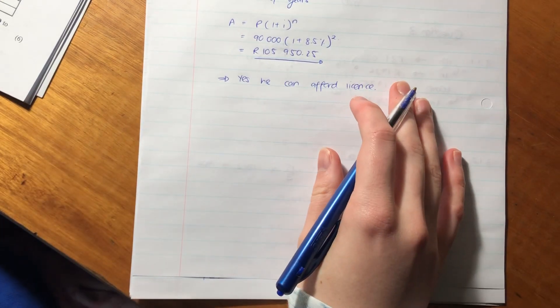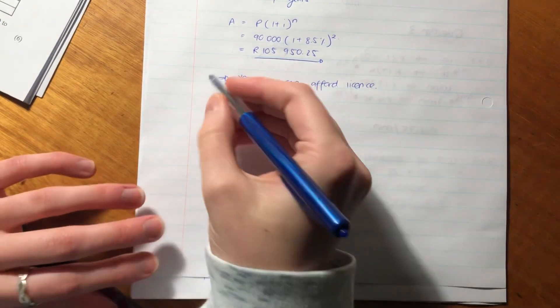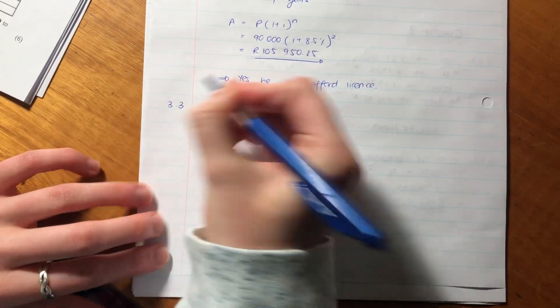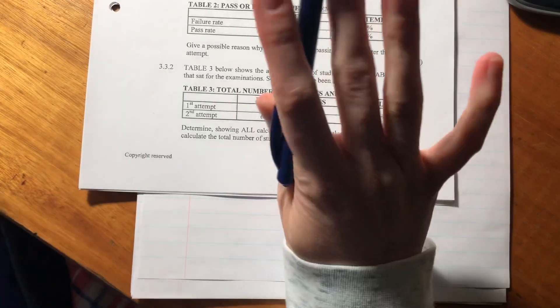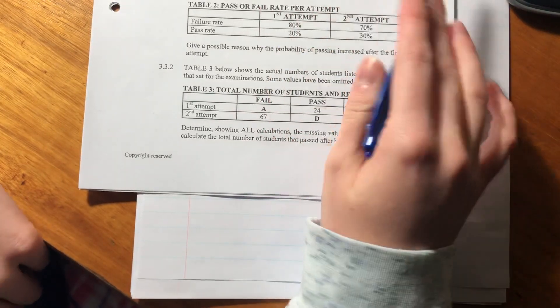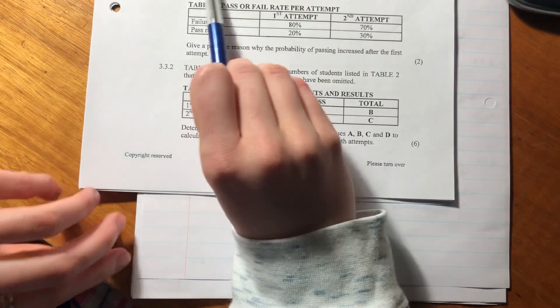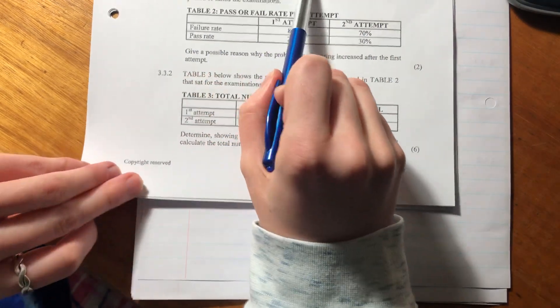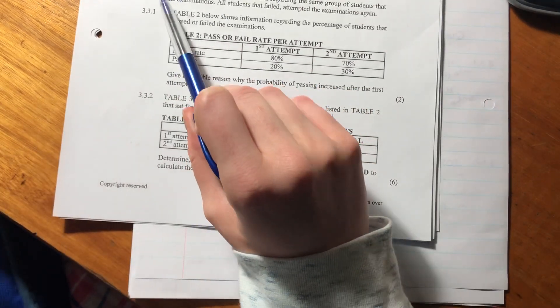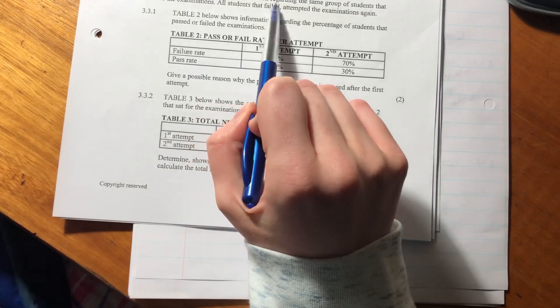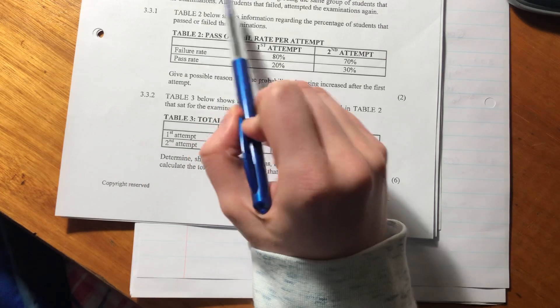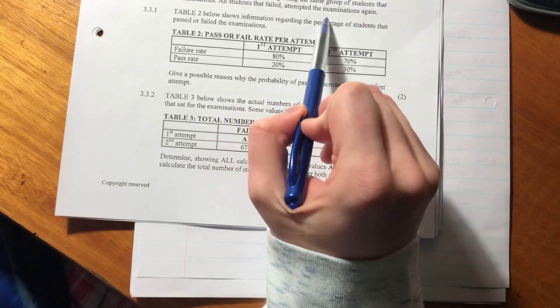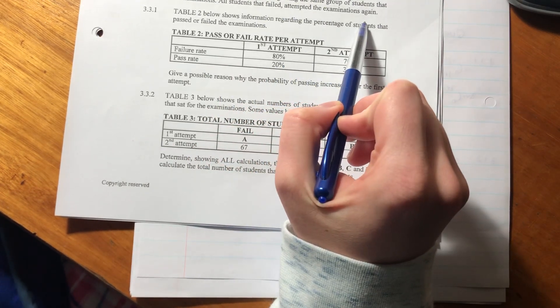Okay, let's move on to 3.3. So 3.3 has quite a lot of tables in it, but let's just not panic and look through the scenario. It says Franco noted that not all the students pass the examinations. Table 2 and Table 3 show information regarding the same group of students that sat for the examinations. All students that failed attempted the examinations again.